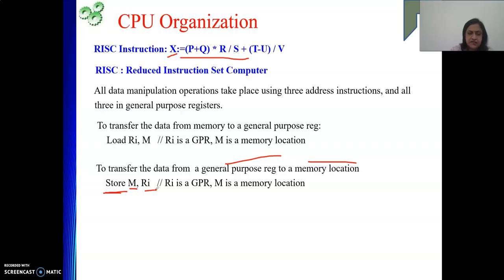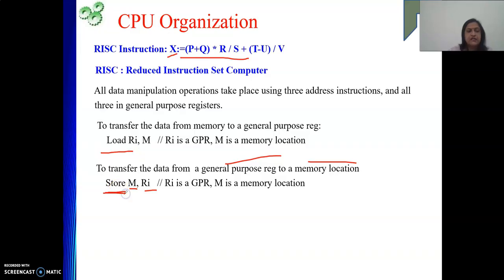When writing RISC instructions, for performing operations we use 3-address instructions where all three operands are in general purpose registers. To communicate with memory, we use load and store instructions. Load and store can communicate between memory and a general purpose register. Now we are ready to evaluate the expression.